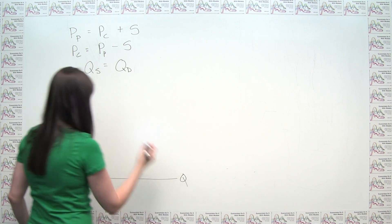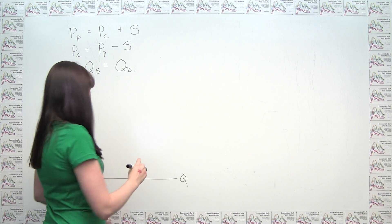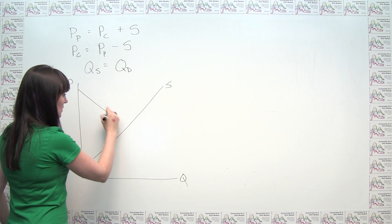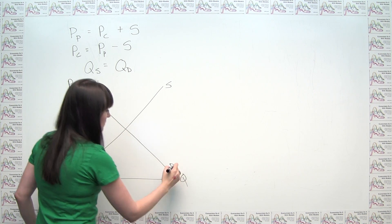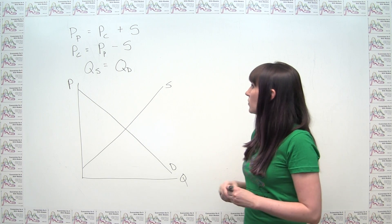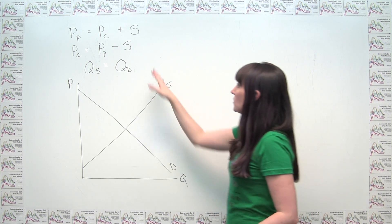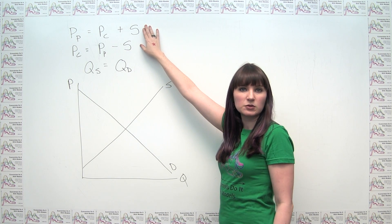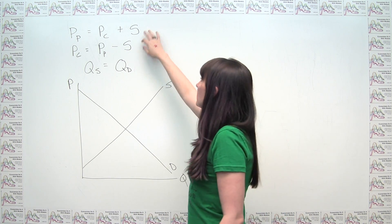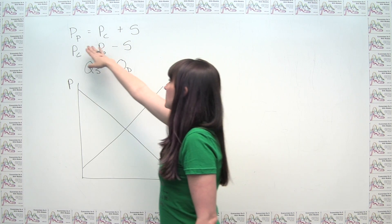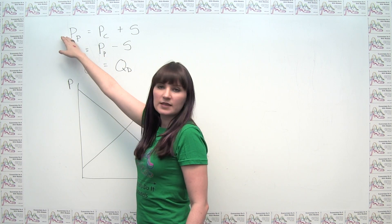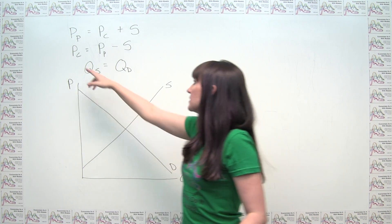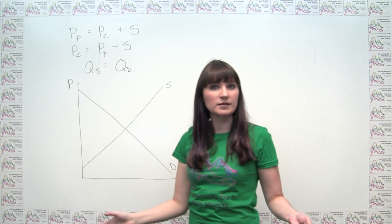Again, we have quantity on the horizontal axis, price on the vertical axis, and we can just draw a typical upward sloping supply curve and a typical downward sloping demand curve. And now we want to look for a place where these relationships hold. And notice that the price to the producer is given by the supply curve, and the price to the consumer is given by the demand curve. Sometimes these are referred to as the supply price and the demand price for that exact reason.